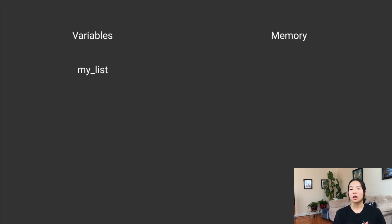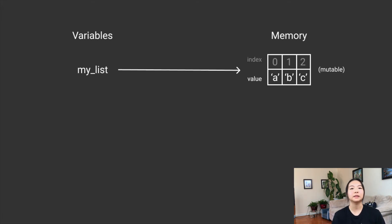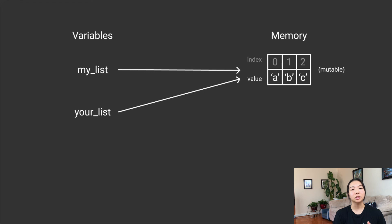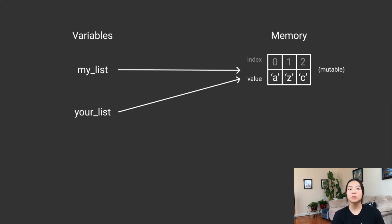Now I have one last example to show you about the power of variables and mutability. I'm going to create a new variable called my_list and assign it to the list A, B, C. I'm also going to create your_list and say your_list equals my_list — so right now our lists are going to be equal, because we're assigning it to the same value. What happens if I go into my_list and change the second object to Z? Now my_list is A, Z, C. The pointers are still pointing to the same object, because all we did was edit it. So if we look at your_list, it's also A, Z, C.